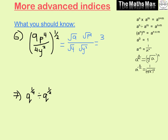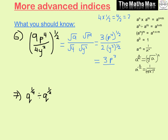The square root of 9 is 3. The square root of p to the power of 4 is p to the power of 4 times a half. The square root of 4 is 2, and y squared to the power of a half stays as y squared times a half. Multiplying those indices: 4 times a half equals 2, so we get p squared on top. On the bottom, 2 times a half equals 1, giving 2y. So our answer is 3p squared over 2y.